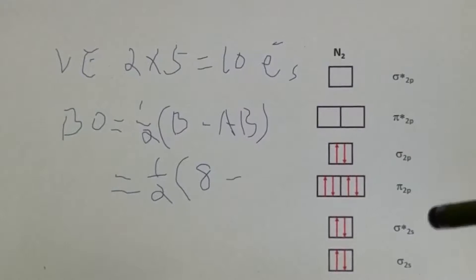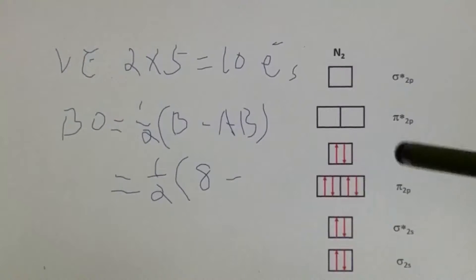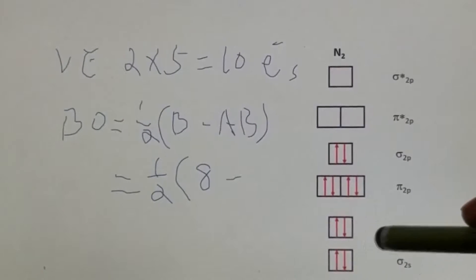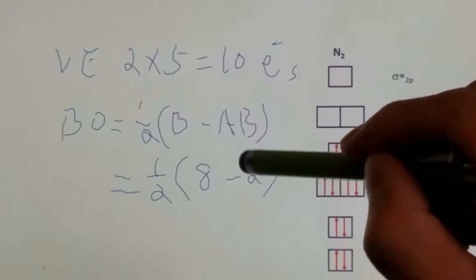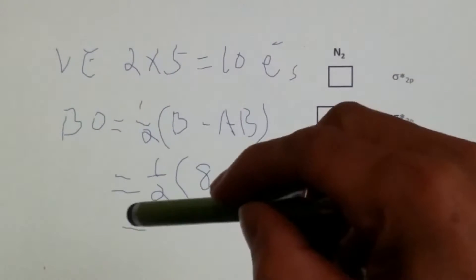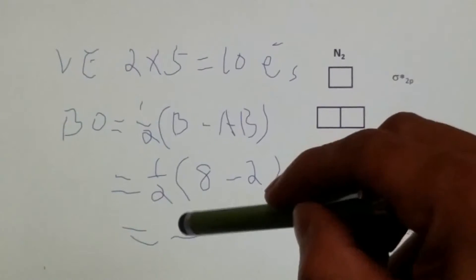Anti-bonding: look at those four molecular orbitals, the only anti-bonding orbital is this sigma 2s star, two electrons, anti-bonding electrons, and that should give us plus 3.